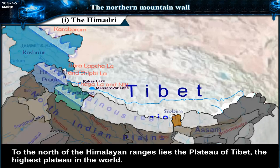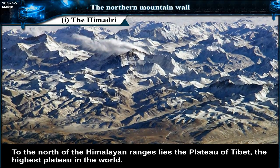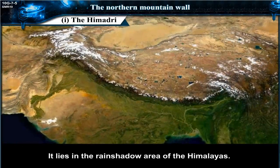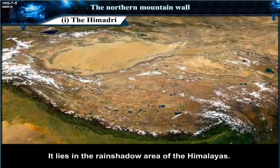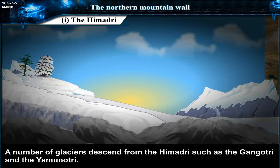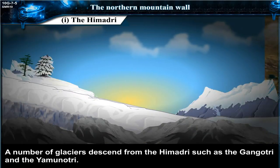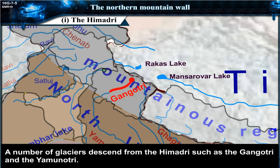To the north of the Himalayan ranges lies the Plateau of Tibet — the highest plateau in the world. It lies in the rain shadow area of the Himalayas. A number of glaciers descend from the Himadri.